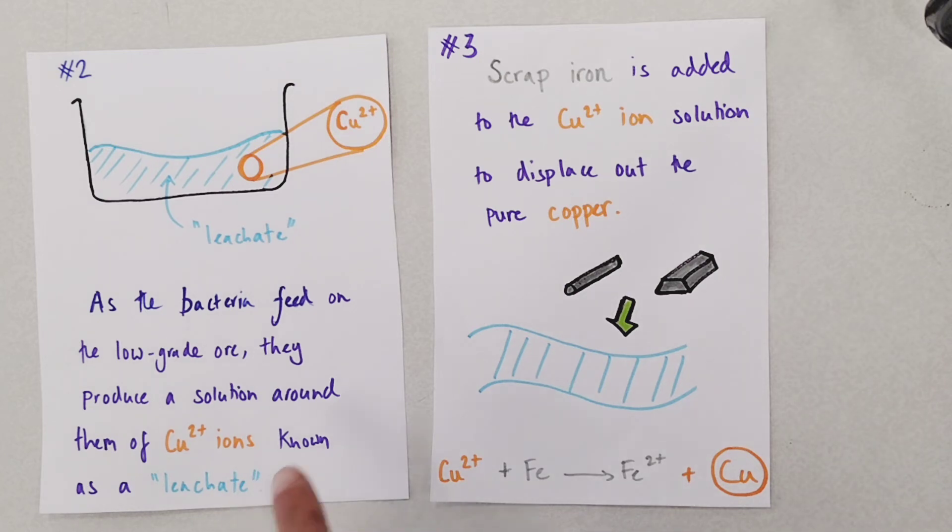In fact, it's the same reaction as before. Similarly to phytomining, there are some really key advantages to using this method for extracting copper over the more traditional methods. It is a highly efficient extraction method for one.